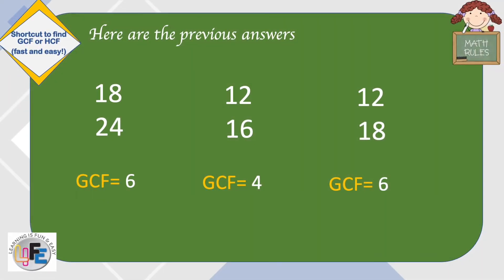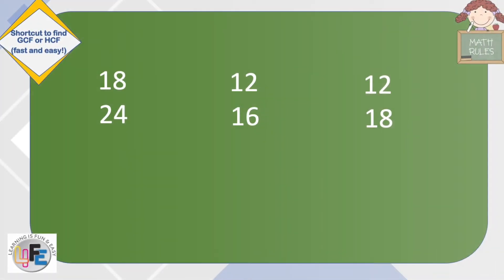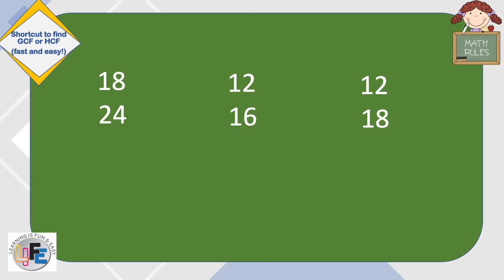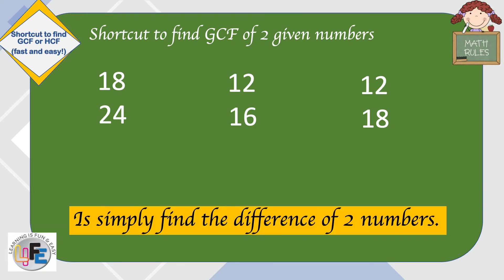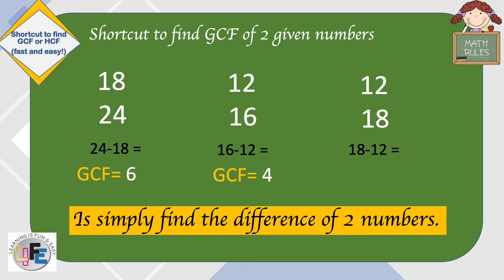Here are the previous answers we got from the long and traditional method. Now let's find out how to get the GCF in a shortcut way. The answer is simply find the difference of two numbers. Easy peasy, kiddos.